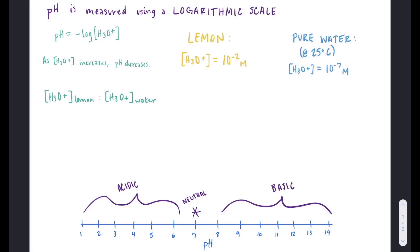We can look at this relationship by comparing two common substances, water and lemon juice, to see how their concentrations of hydronium ions affect their pH.